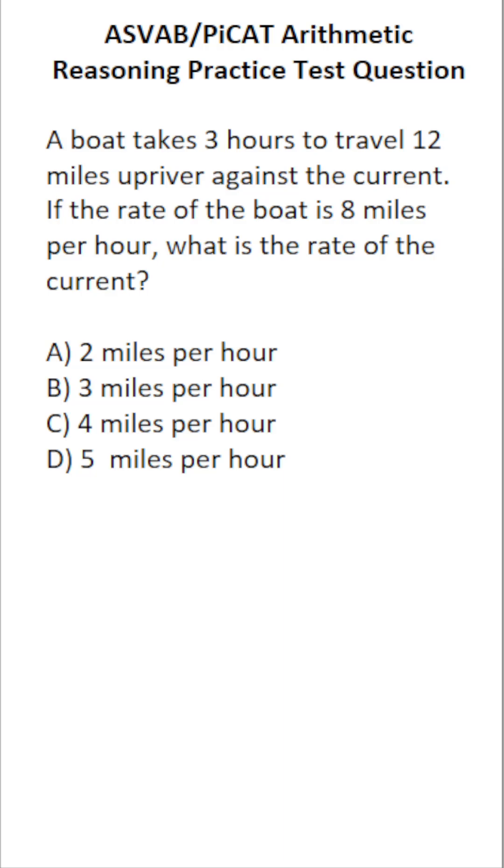Right away, you're probably recognizing all the elements of the distance formula. That is, distance is equal to rate times time. Specifically, you're probably saying, well, we know we have a time of three hours, the boat traveled a distance of 12 miles, and we know its rate was eight miles per hour.